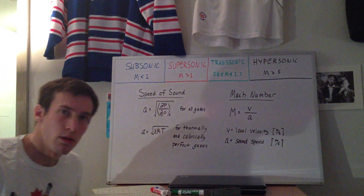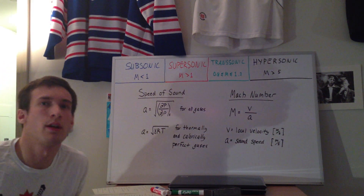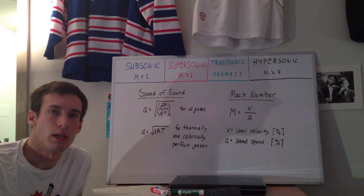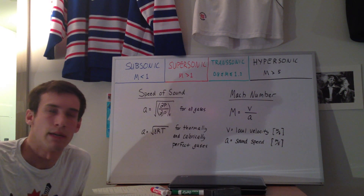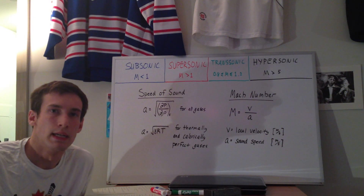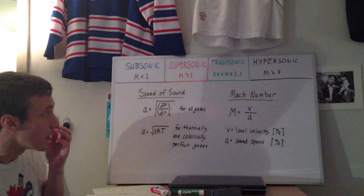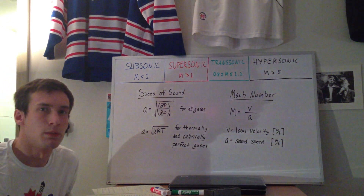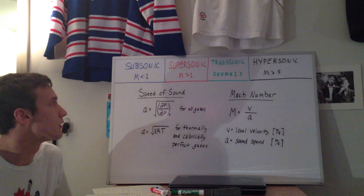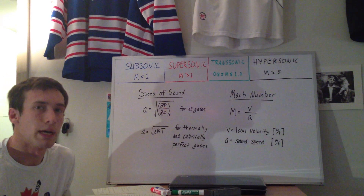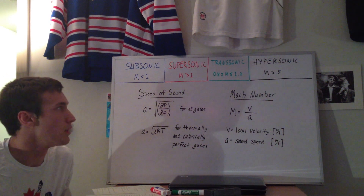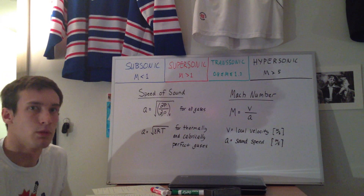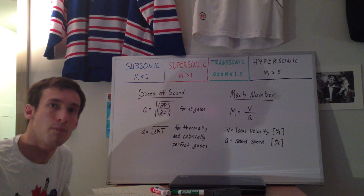Hey everyone. In this video I'm going to be talking about different flow regimes that are encountered when you have a body flowing in a gas. At the top of the board you can see the four different flow regimes I'll be talking about, defined in terms of their Mach numbers. Before I can continue on, I want to define the Mach number, which relies on the definition of the speed of sound.